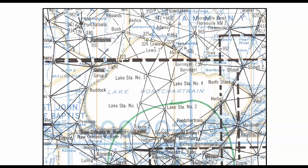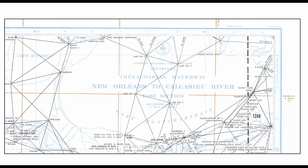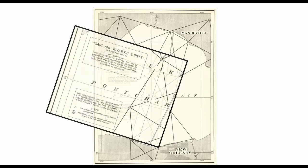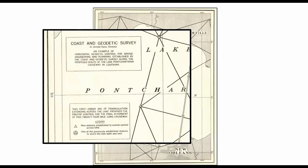Here's a close-up of the lake showing the triangulation that was observed across the lake when this bridge was built. And here's another close-up view from another diagram giving additional detail, including a line whose length was actually measured. I came across an old plan — this is an example of horizontal geodetic control for bridge engineering and planning — and it happens to be the exact bridge we're talking about.